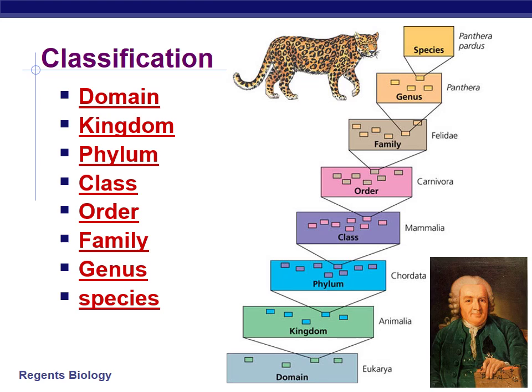The jaguar is in the domain Eucarae, the kingdom Animalia, the phylum Chordata — meaning it has a backbone, the class Mammalia — meaning it's a mammal, the order Carnivora — meaning it's a carnivore, the family Felidae — meaning it's a cat, the genus Panthera — meaning it's a panther, and finally the species Panthera pardus, which is a specific type of jaguar.